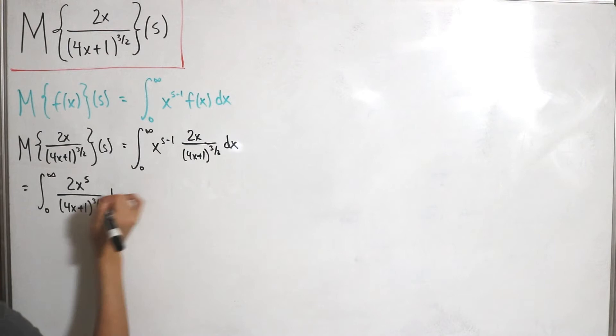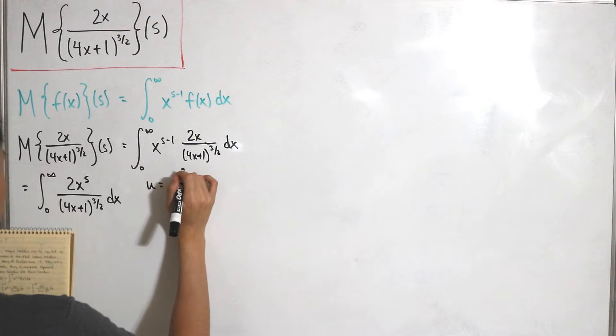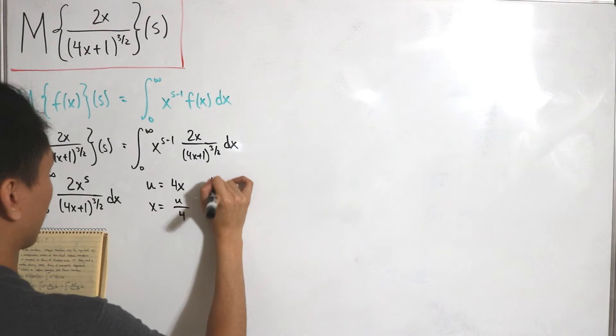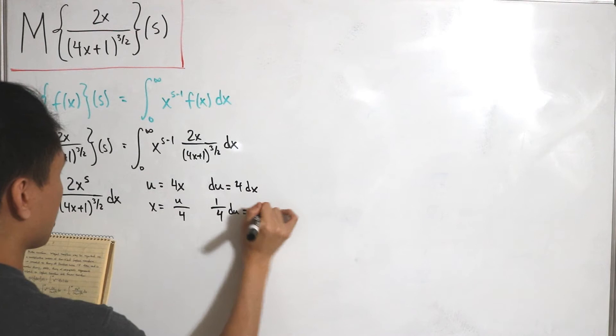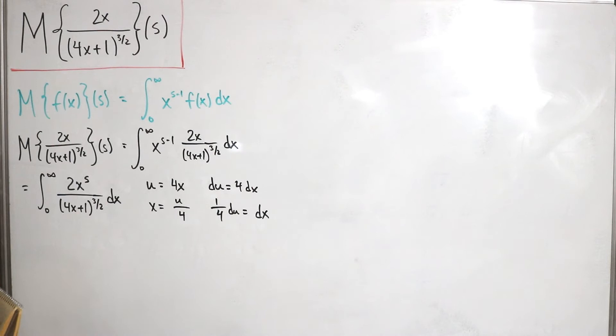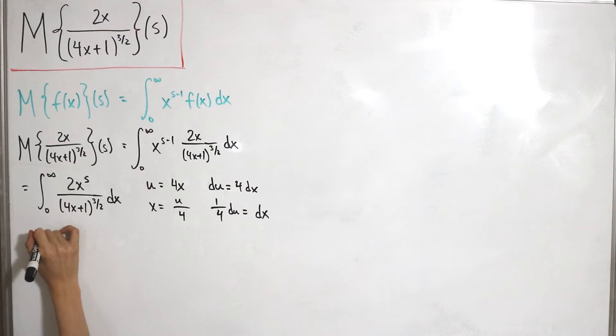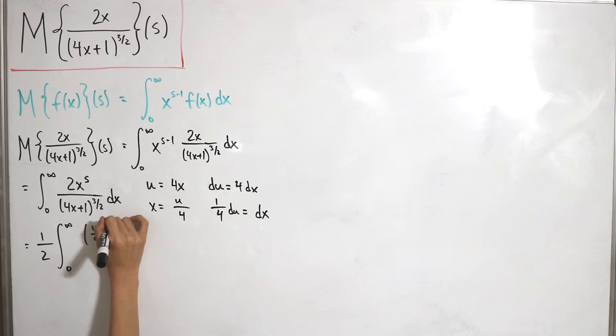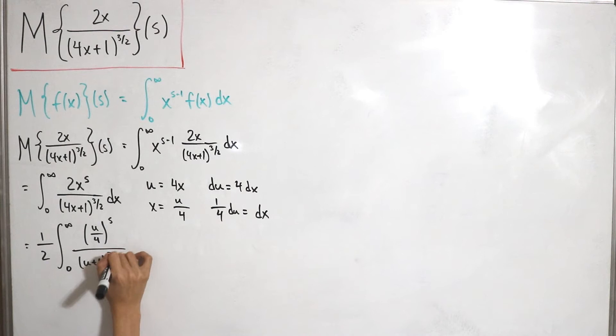To tackle this integral, let's perform a u-substitution. Let u equal 4x, so x equals u divided by 4. Taking the differential of both sides gives du equals 4 dx, or equivalently dx equals (1/4) du. Plugging everything in, the 2 out front and the 1/4 factor combine to give 1/2 outside the integral. The bounds stay from 0 to infinity, and x to the power s becomes (u/4) to the power s, divided by (u + 1) to the power 3/2, du.